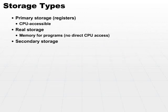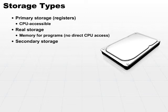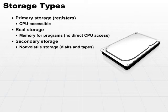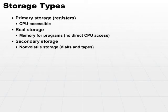Secondary storage is a type of storage which we normally refer to as our hard disks or our external storage. It's non-volatile storage. It involves disks, tapes, and any other devices that you can retain data on even after you power a machine down. Remember, primary storage and real storage are all volatile memory — when you turn the power off, the data is all gone.